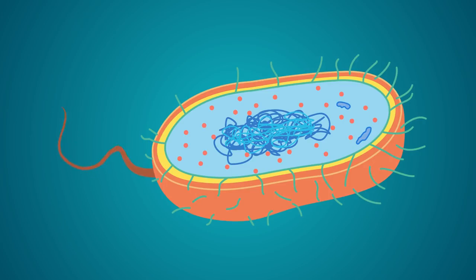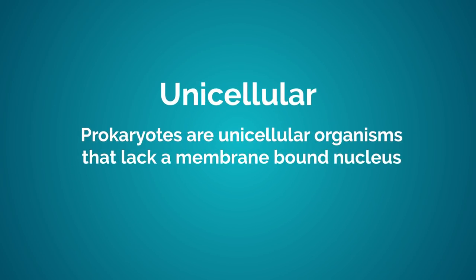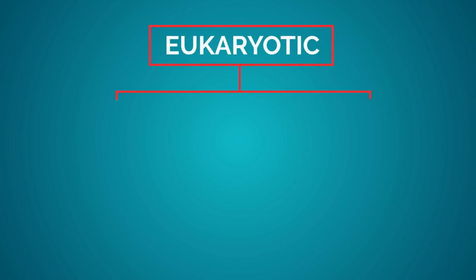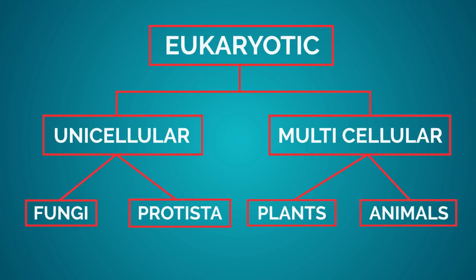So we know that prokaryotes don't have a nucleus and lack most other organelles. Our final point is that all prokaryotes are unicellular. They are defined as unicellular organisms that lack a membrane-bound nucleus. Eukaryotes can be either uni- or multicellular.